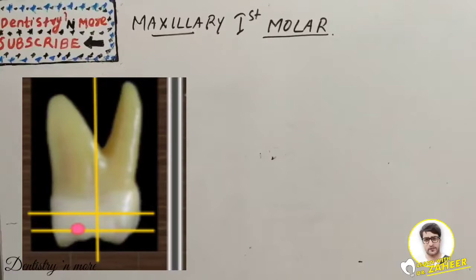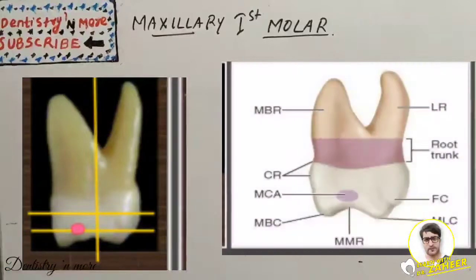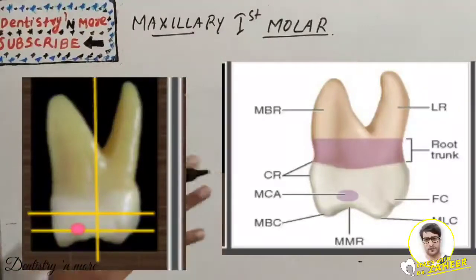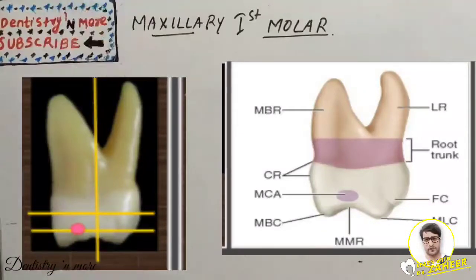There is a shallow concavity usually present cervical to the mesial contact area, extending to the root. From the mesial aspect, two roots are seen: the mesio-buccal root and the palatal root. The mesio-buccal root is broad and flat; its width at the bifurcation area is nearly equal to two-thirds of the total buccal-lingual measurement. The buccal outline extends upward and the lingual outline is almost a straight line.